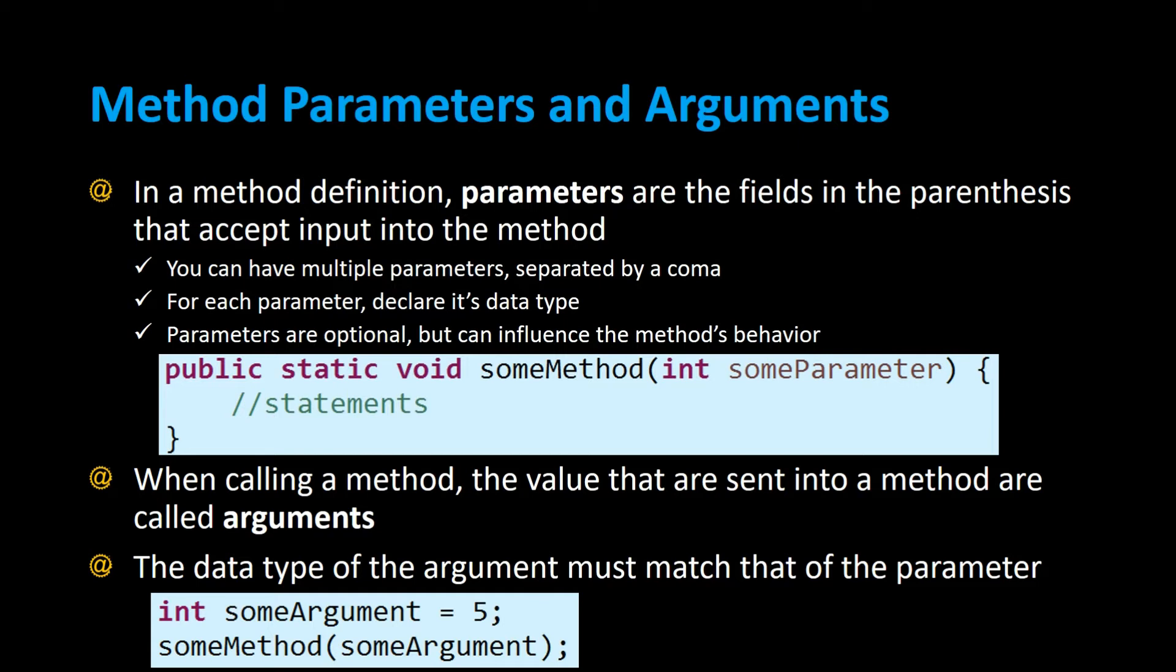You can have multiple parameters separated by a comma, and for each parameter you declare its data type. Parameters are optional but they can influence the method's behavior.